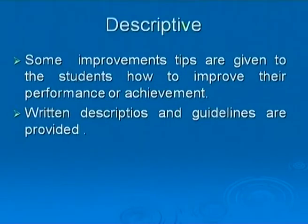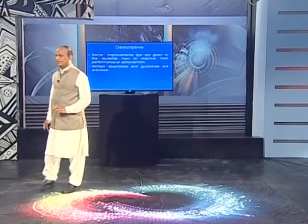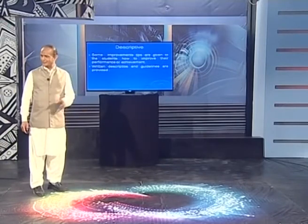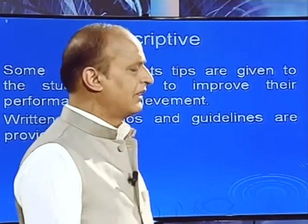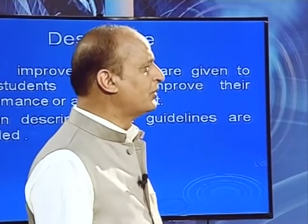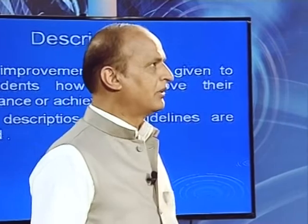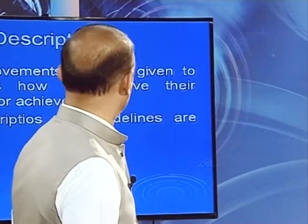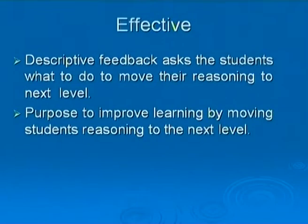Another type is descriptive feedback. In descriptive feedback, tips are given to students on how to improve their performance or achievements — in the form of guidelines and descriptions. Sometimes evaluative and descriptive feedback go side by side. In evaluation, only the qualitative aspect is provided; against those qualitative aspects, if we give guidelines on how to improve from bad to good or from very low to very high, those descriptions become descriptive feedback.